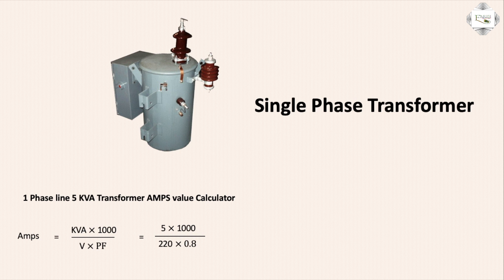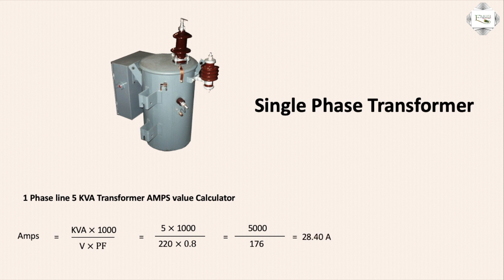Substituting values: KVA 5 into 1000, divided by 220 volts into PF value 0.8. Calculate: 5000 divided by 176 equals 28.40 ampere. So the single-phase transformer ampere value is 28.40 ampere. This is how you calculate KVA to ampere for single-phase and three-phase lines. Thank you.